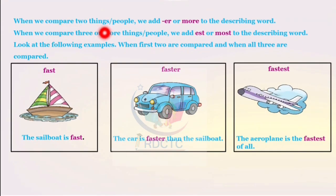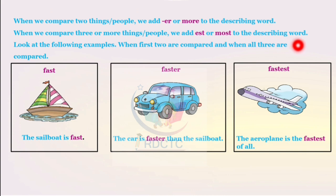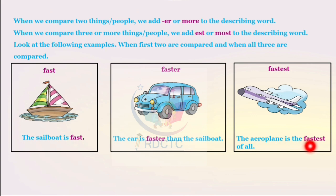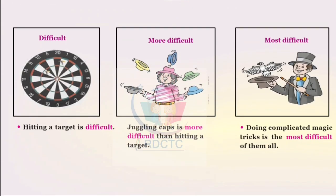When we compare two things or people, we add -er or more to the describing word. When we compare three or more things or people, we add -est or most to describing words. Look at the following examples. The sailboat is fast, the car is faster than the sailboat, and the aeroplane is the fastest of all. Hitting a target is difficult. Juggling caps is more difficult than hitting a target. Doing complicated magic tricks is the most difficult of them all.